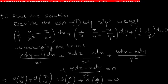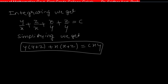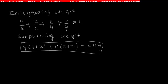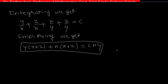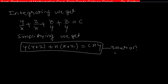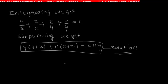Integrating the whole equation, the differentials integrate directly to give: y/x + z/x + x/y + z/y = c. Simplifying by taking xy as LCM and cross multiplying: y(y + z) + x(x + z) = cxy. This is the solution of the given equation. Thank you.